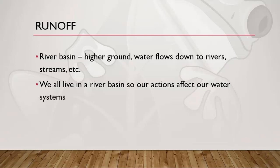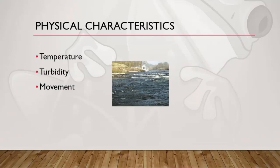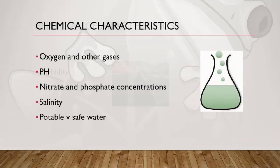Let's talk about water quality and how we measure it. There are physical characteristics of a body of water that can be measured to determine the health of a water system. These physical characteristics are temperature, turbidity — which is how clear the water is — and the movement of water. There are also chemical variables that can be measured, including dissolved oxygen and other gases, the pH or acidity of the water, the amount of nitrates and phosphates, and the amount of salt in the water. Water that is safe to drink comes from our freshwater systems and is called potable water, which is different from safe water that can be used for bathing or cleaning. The Environmental Protection Agency sets maximum levels for the 90 most common contaminants in our water.